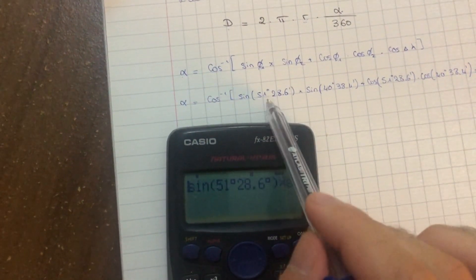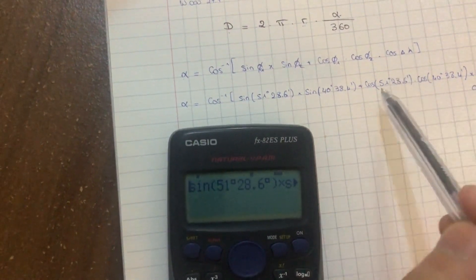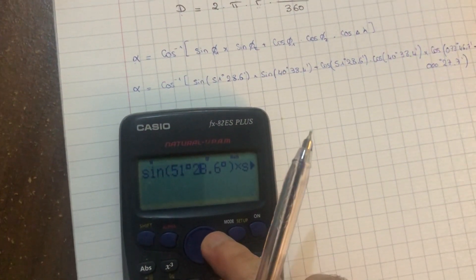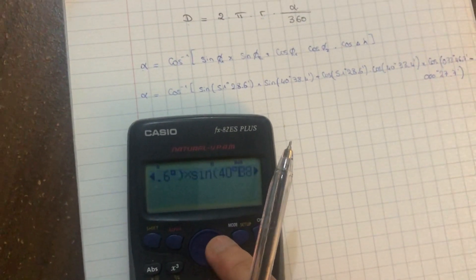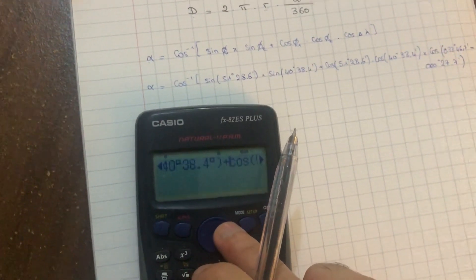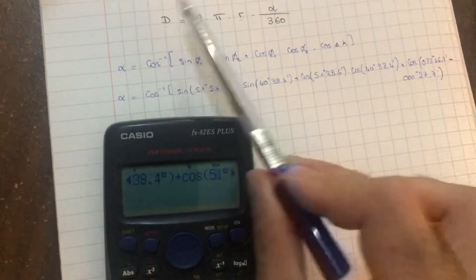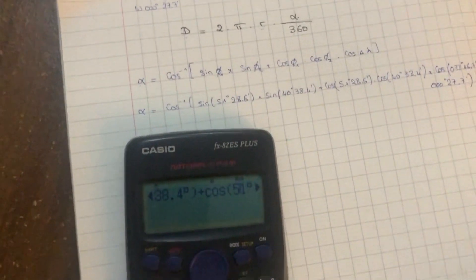the sine of the first latitude times the sine of second latitude, plus the cosine of the first latitude multiplied by the cosine of the second point's latitude, and then multiplied it by the cosine of the difference of both points' longitudes. Now